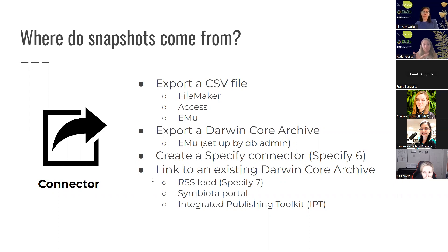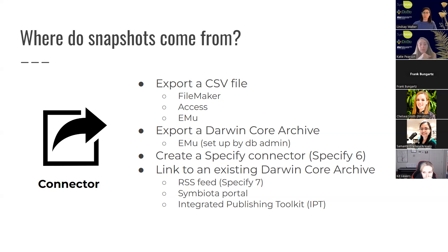You can provide Symbiota with a link to where a Darwin Core Archive can be found, and the Symbiota portal will download it to its server, analyze it, and then you'll be able to look at it before it finally imports. Some ways to have a link to an existing Darwin Core Archive: Specify 7 has a new way to create a link, something like an RSS feed; Symbiota portals themselves have Darwin Core Archives you can link from; and probably the most common we work with are links provided by Integrated Publishing Toolkits — software provided by GBIF that allows your data to be packaged into a Darwin Core Archive, providing a link that a Symbiota portal can grab.